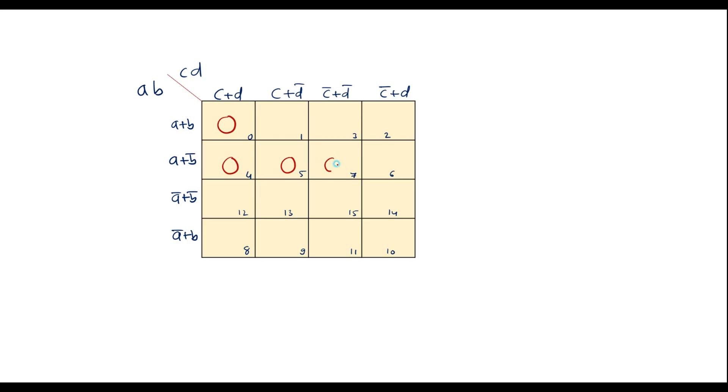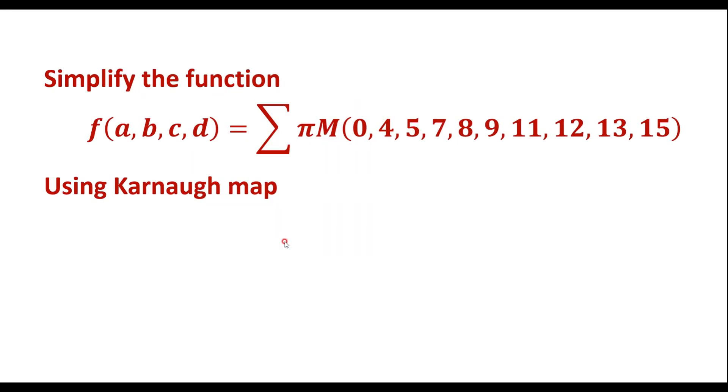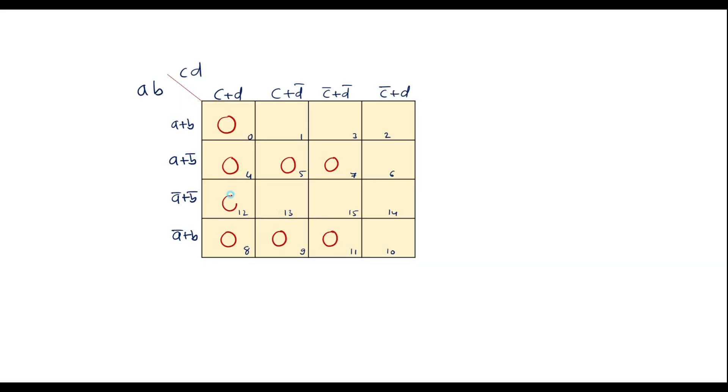That is cell number 7, 8, 9. In all these cell numbers we have to write zeros. 7, 8, 9, 11, 12, 13, 15. That is 11, 12, 13 and 15.